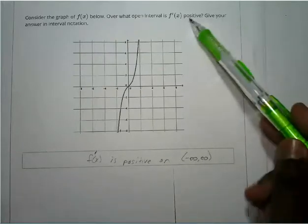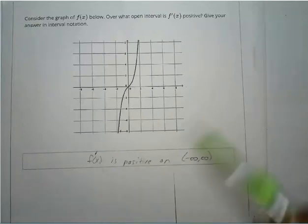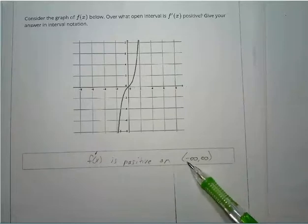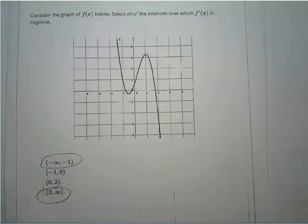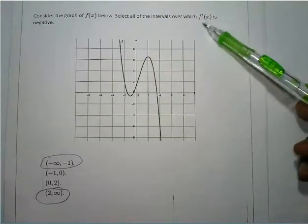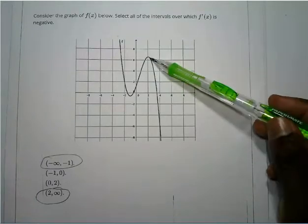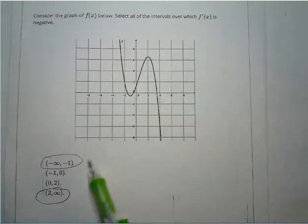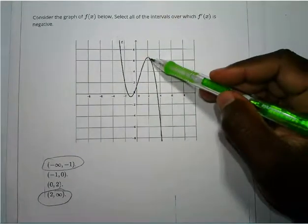For f(x) equals x cubed, over what interval is the derivative positive? It goes up and to the right throughout the whole thing, so it has a positive derivative on the entire interval from negative infinity to infinity. In another example, the derivative is negative from negative infinity to negative 1 and from 2 to positive infinity, and positive between negative 1 and 2.